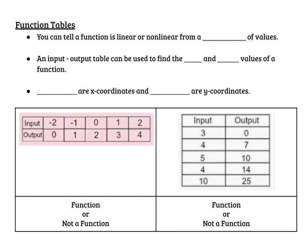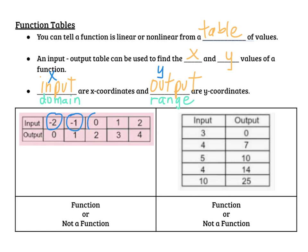And our last look is function tables. We looked at mapping diagrams and graphs and now we're looking at tables. You can tell a function is linear or nonlinear from a table of values. An input and output table can be used to find x and y values of a function. The input are the x-coordinates and the output are the y-coordinates, and let's also put in the words domain and range right underneath those. So the x is the input or the domain and the y is the output or the range. So again, every input has to have exactly one output. So when we look at the inputs, these all have to be different. And it looks like they are. So this is a function.